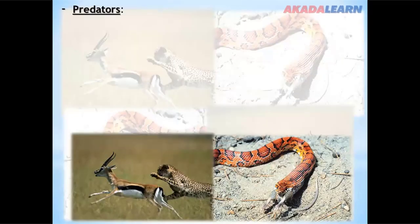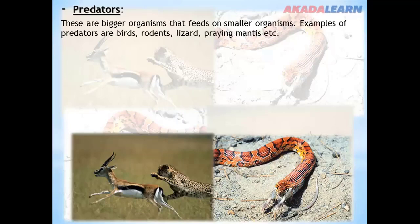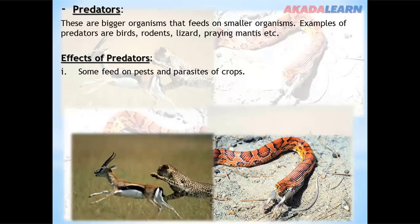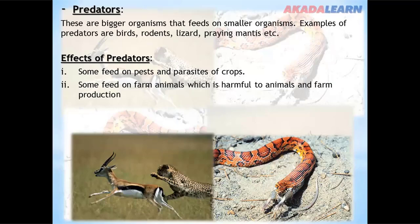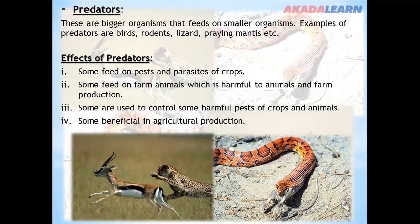Predators are bigger organisms that feed on smaller organisms. Examples of predators are birds, rodents, lizards, fairy martins, and many more. Their effects: some feed on pests and parasites of crops; some feed on farm animals, which is harmful to farm production; some are used to control harmful pests of crops and animals; and some predators are beneficial in agricultural production.